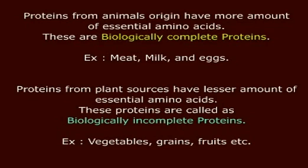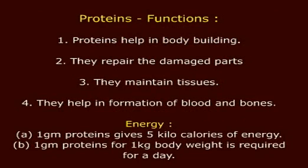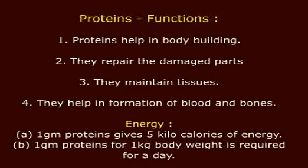Non-essential amino acids are synthesized in our body. Proteins from plant sources have lesser amounts of essential amino acids and are called biologically incomplete proteins. Examples include vegetables, grains, and fruits. Proteins help in bodybuilding, repair damaged parts, maintain tissues, and help in the formation of blood and bones. One gram of protein gives 5 kilocalories of energy, and one gram of protein per kilogram of body weight is required per day.